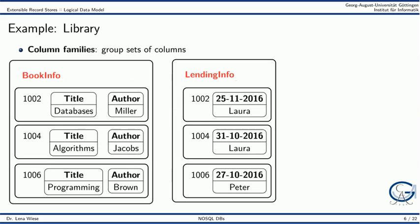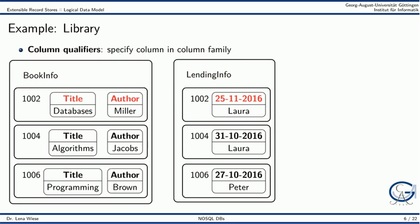Let's look at the library example. We have one column family called BookInfo. It stores all the administrative information on books. And we have a column family called LendingInfo that stores all the information regarding readers of the books. Inside a column family, we can store columns. For example, every book has a title and an author.